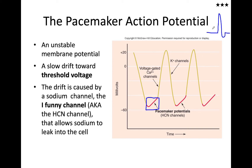In pacemaker cells, we don't have a resting membrane potential — the cell does not remain stable. Instead, what we have is this constant upward drift, a depolarization, a repolarization, only to get another upward drift, and on and on it goes. This pacemaker potential is that unstable membrane potential, and we just keep repeating this process over and over again.